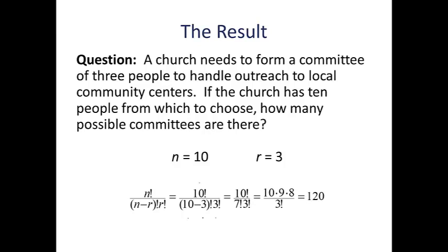Then we start simplifying. 10 minus 3 is 7. That 7 cancels with the last seven numbers in the 10 factorial, leaving 10 times 9 times 8 over 3 factorial. If we simplify that and do the multiplication, we end up with a total of 120 possible committees that this church could form.